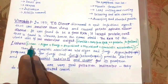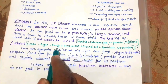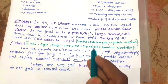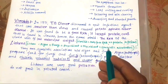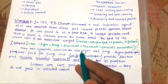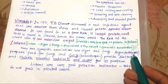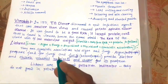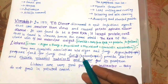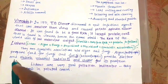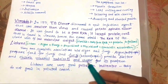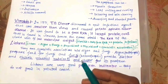Lichens are a symbiotic association of algae and fungi — phycobiont (the algal component) plus mycobiont (the fungal component). Algae are autotrophic because they have chlorophyll and prepare food for the fungi. Fungi are heterotrophic as they have no chlorophyll. In return, fungi provide shelter and absorb mineral nutrients and water for their partner, the algae.